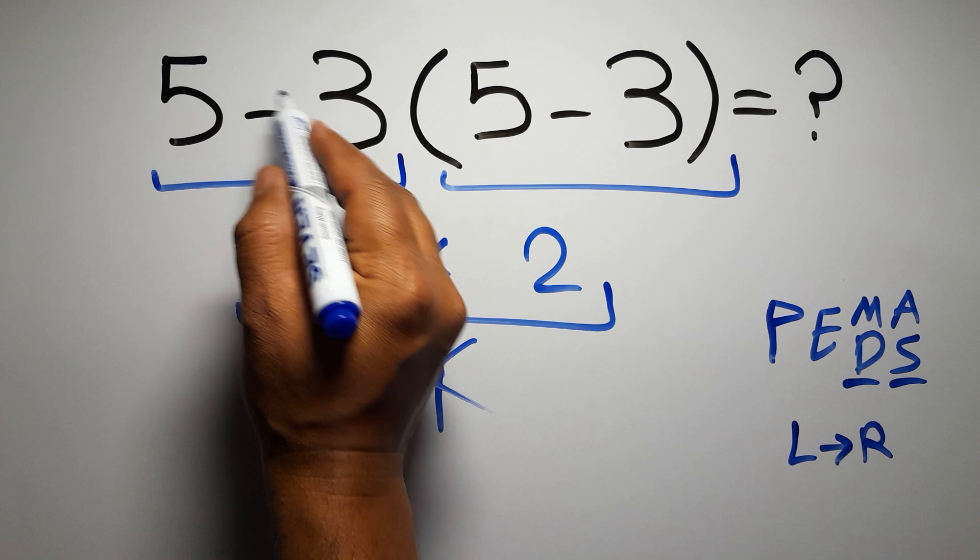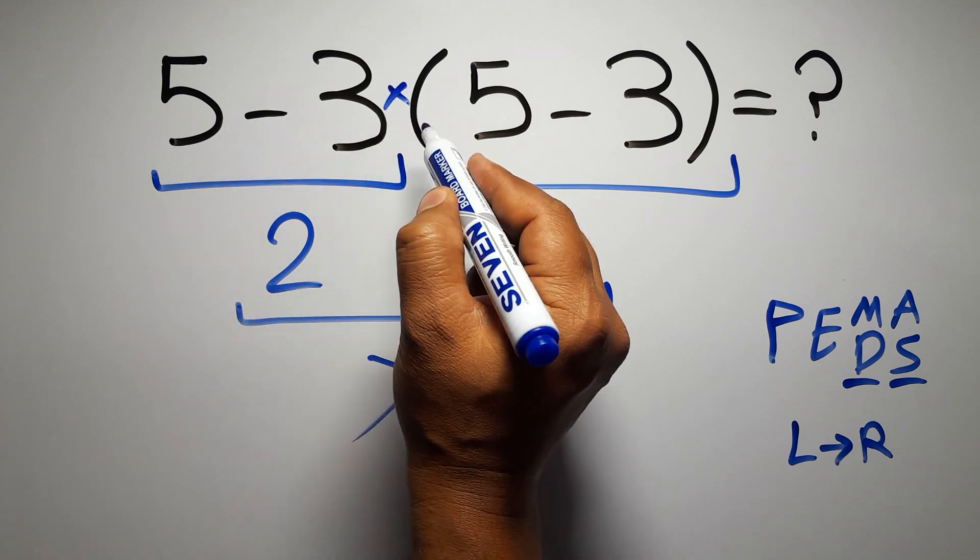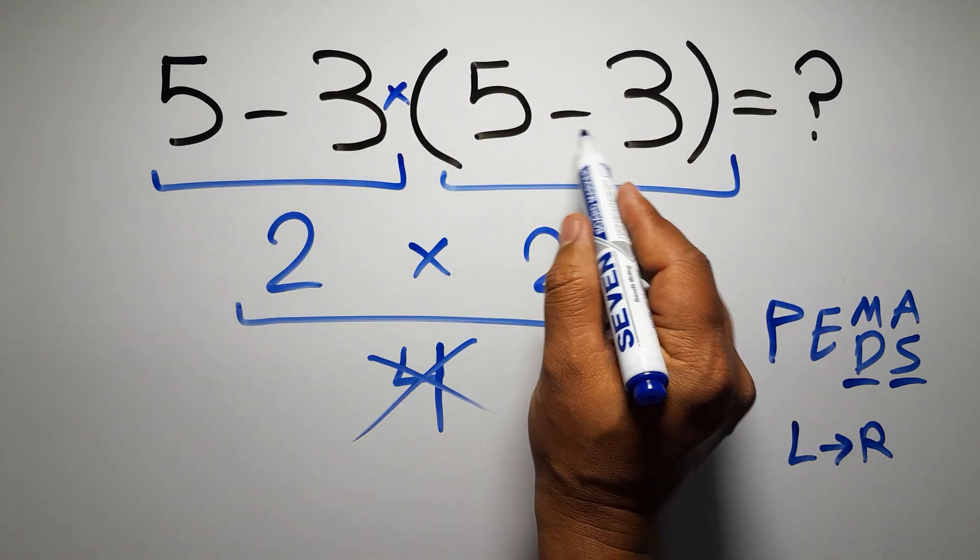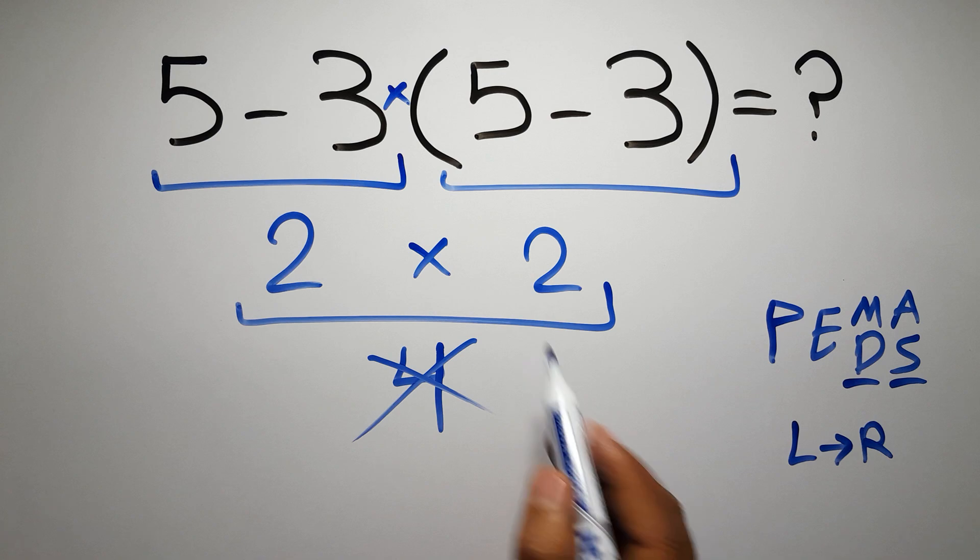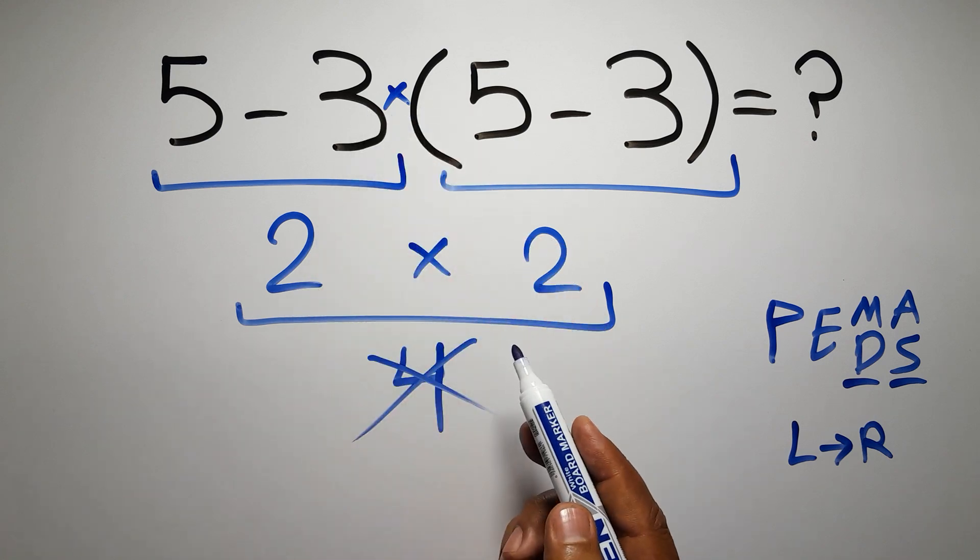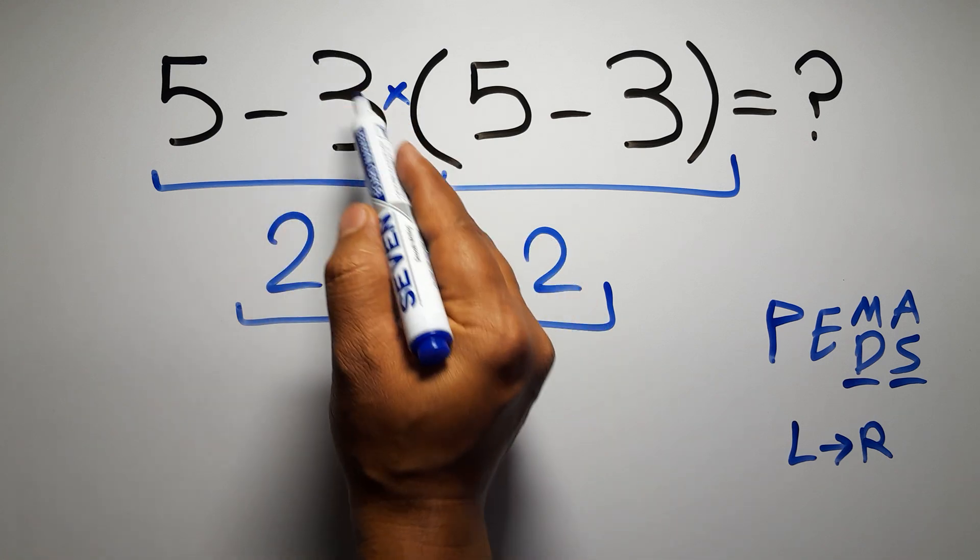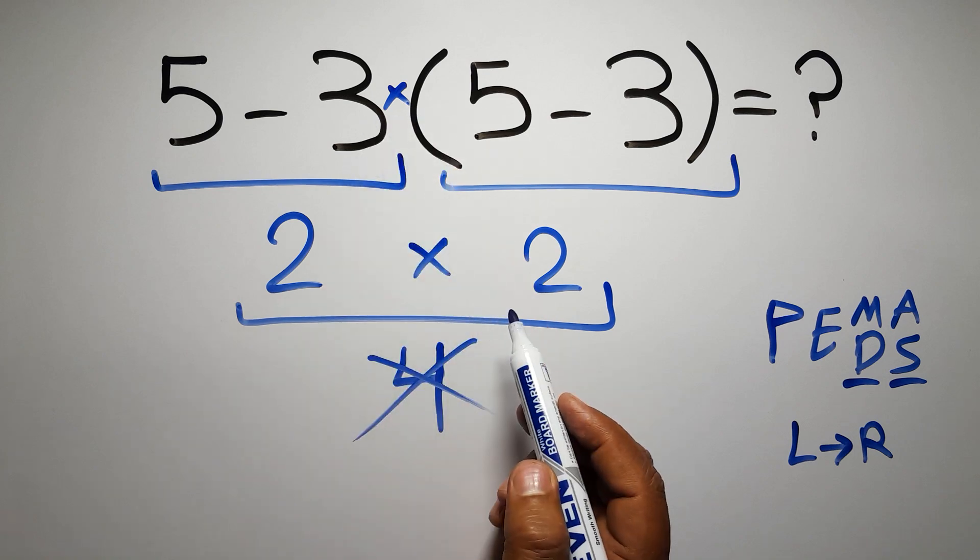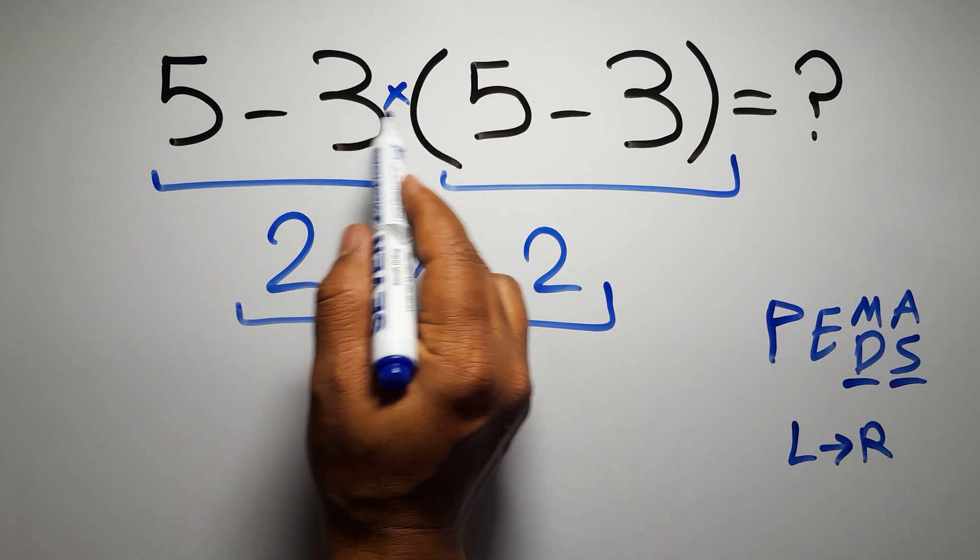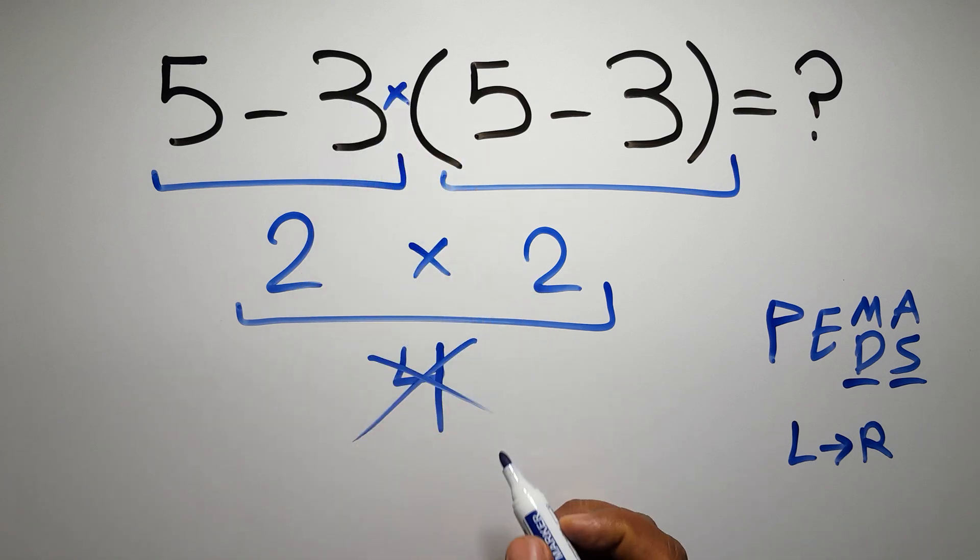In this expression, we have one subtraction, one multiplication, and one parentheses. Inside these parentheses, we have one subtraction. Here we have a multiplication, because in mathematics, when a number is placed next to parentheses, it means multiplication, and we usually don't write the multiplication sign for brevity.